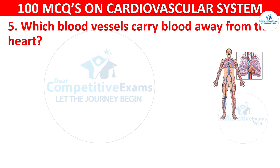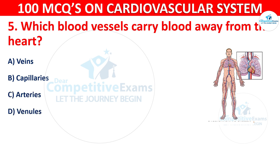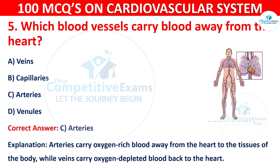Q5. The correct answer is C — arteries. Arteries carry oxygen-rich blood away from the heart to the tissues of the body, while veins carry oxygen-depleted blood back to the heart.